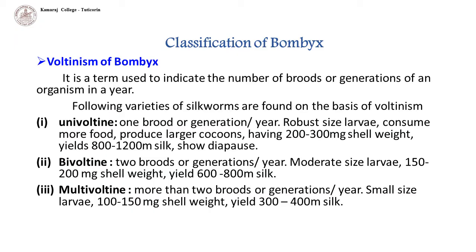Voltanism of Bombyx is a term used to indicate the number of broods or generations of an organism in a year. The term is particularly used in sericulture, where silkworm varieties vary in this aspect. The number of breeding cycles in a year is under genetic control in many species, and they have been evolved in response to the environment.